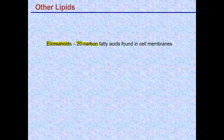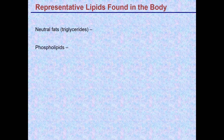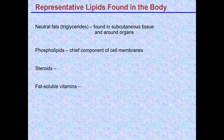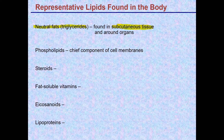The last group of lipids are the eicosanoids. They have a 20-carbon fatty acid chain and are found in cell membranes.